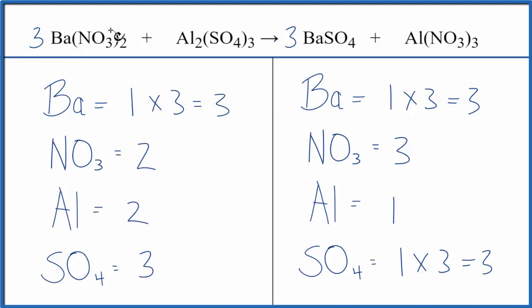And then I have one times the two. So I have two nitrates times three. That'll give me six. Well, I can put a two in front of the aluminum nitrate, and that would balance the nitrates because I have three nitrates here times two. That gives me six.